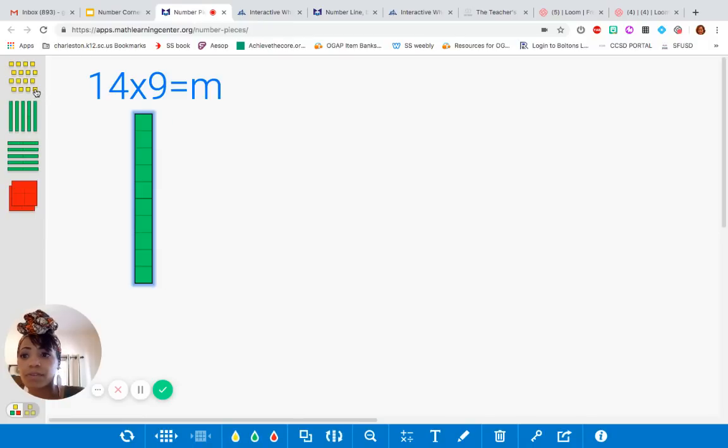So here's my first set of 14. So that's 10. We know that's 10. So 11, 12, 13, and 14. But I know that I'm not done because how many groups of 14 do I need?